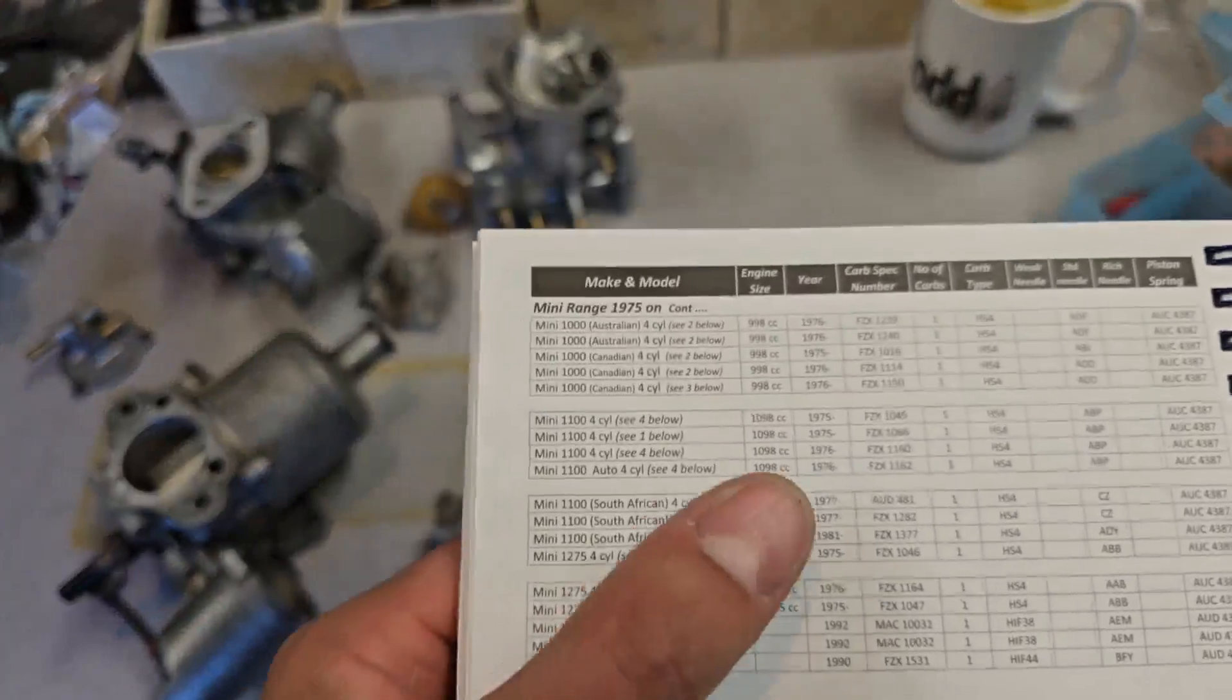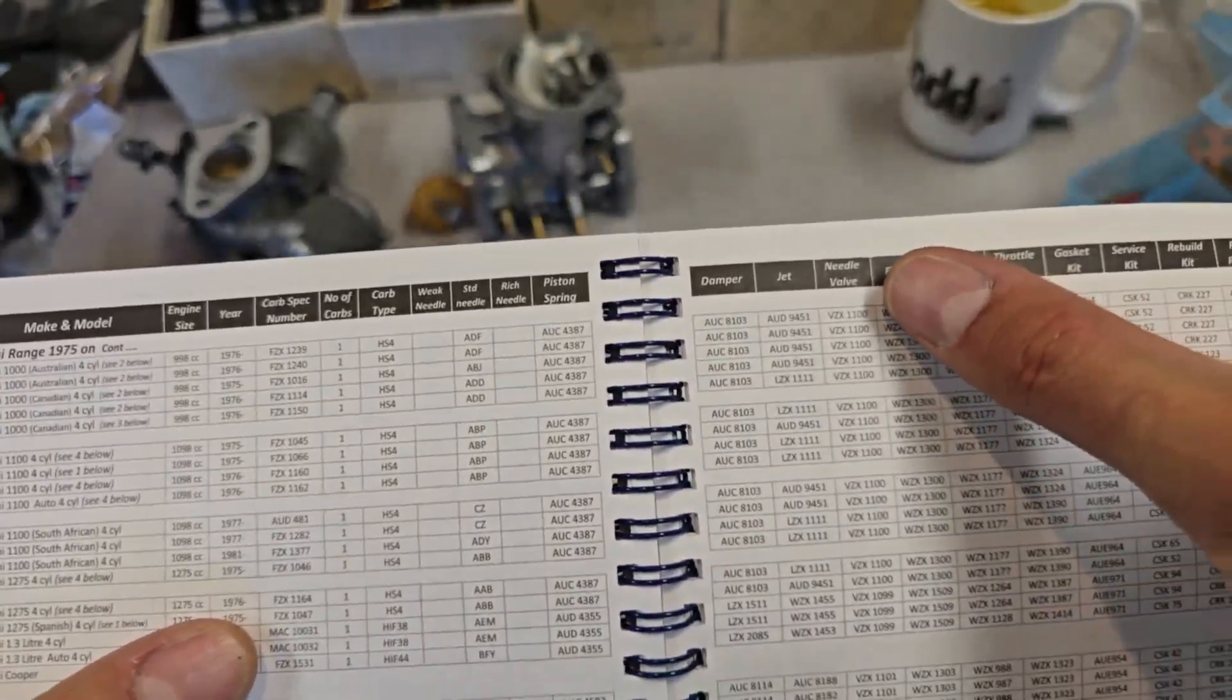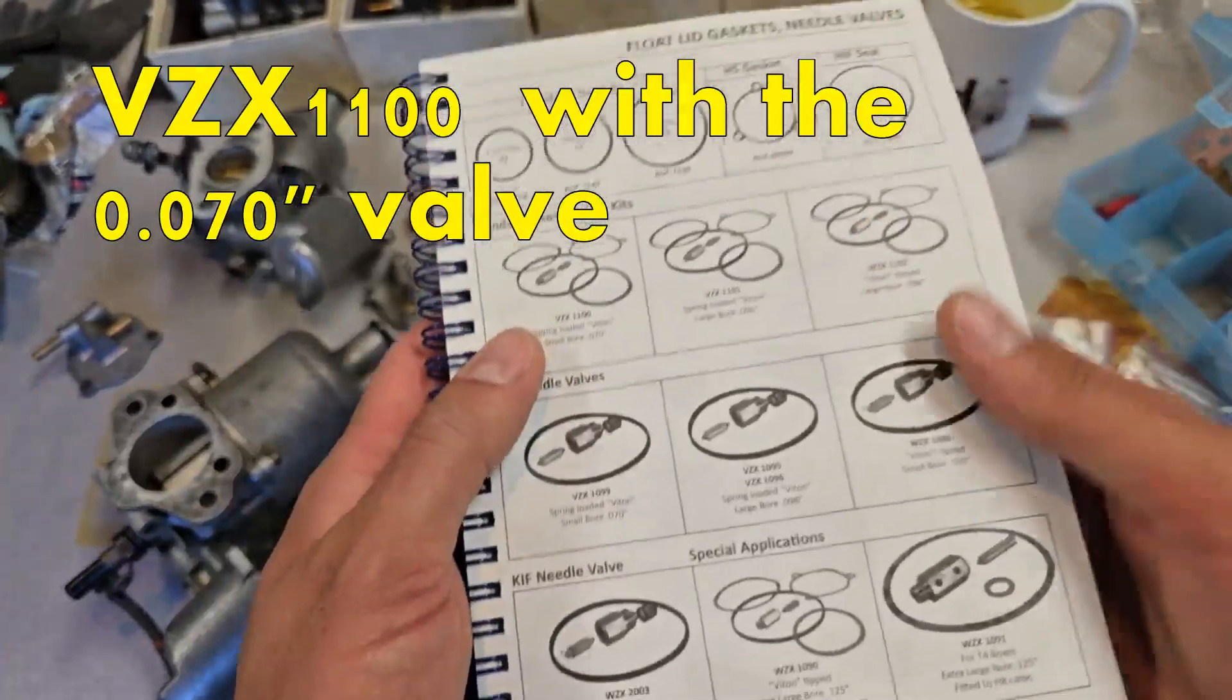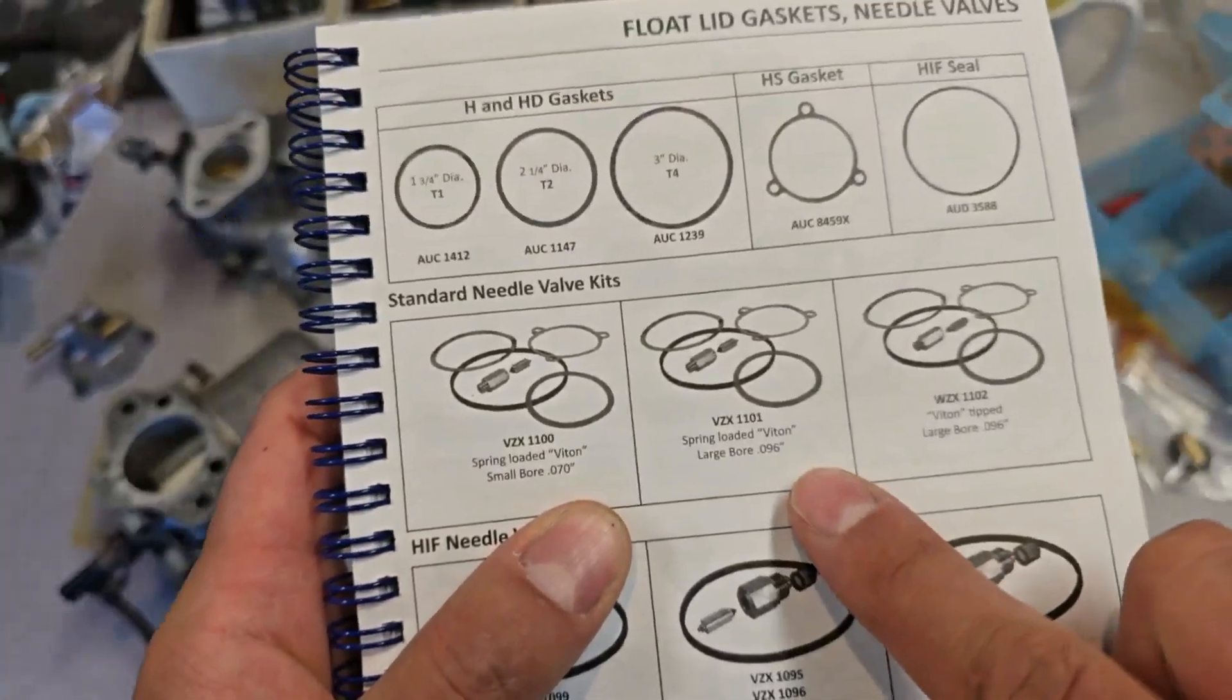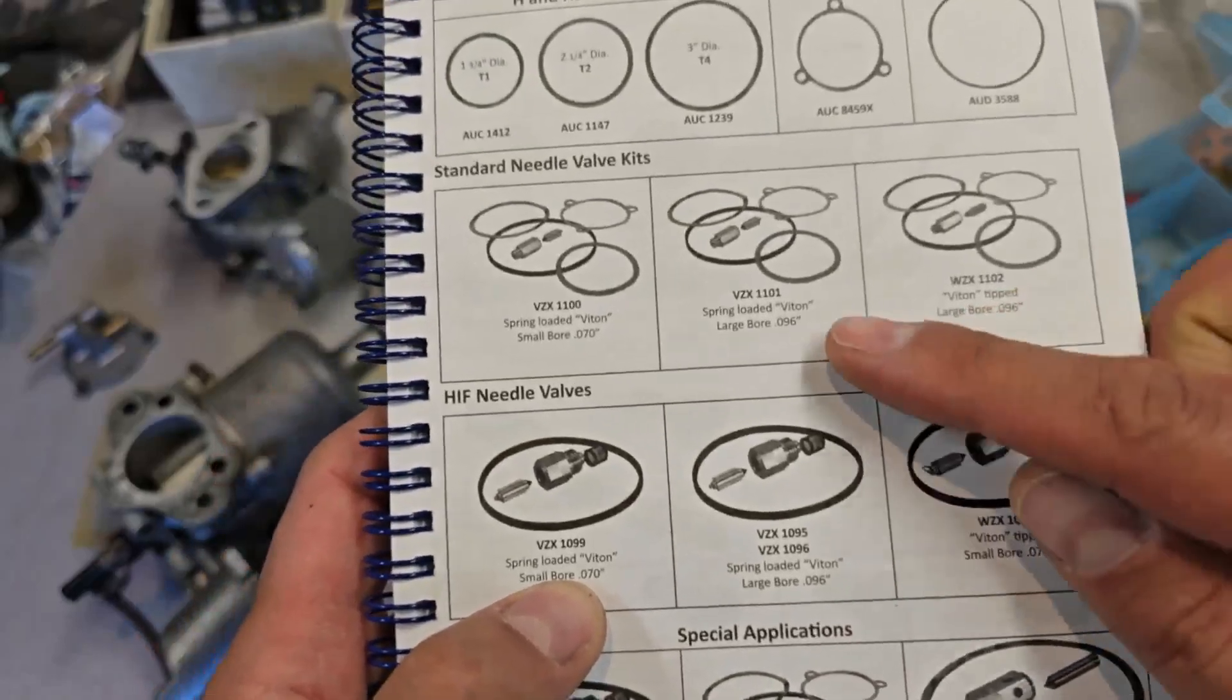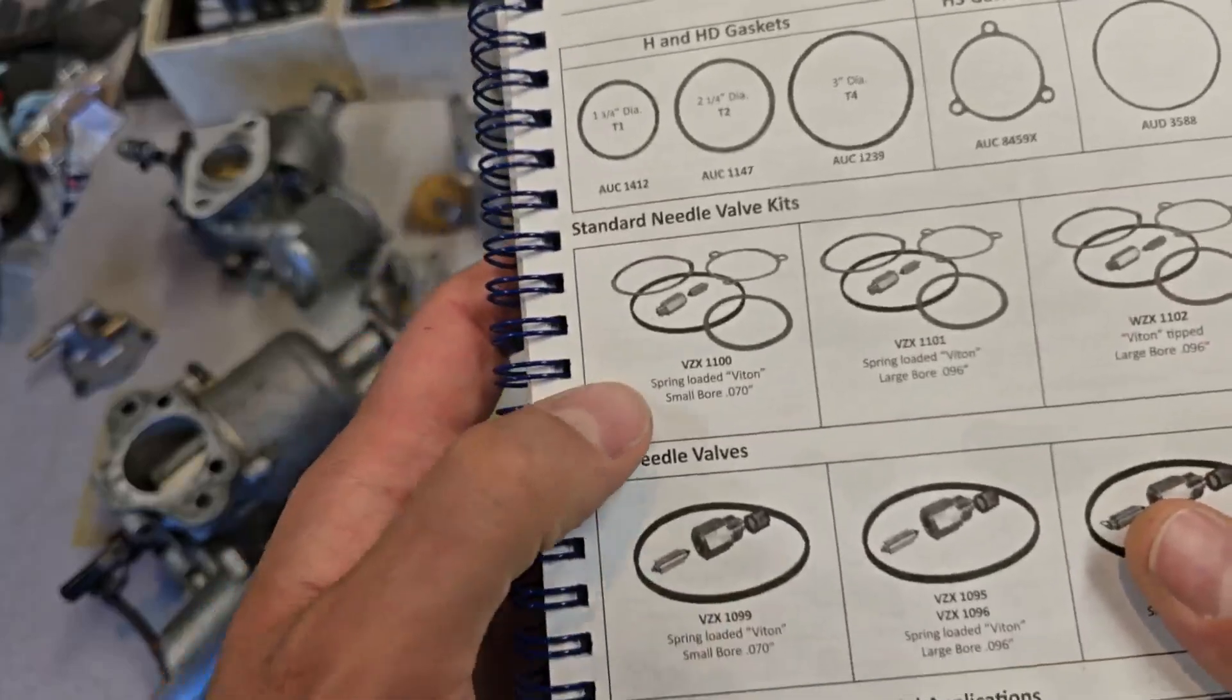So if we flip through here, we get to the mini section. And we can see, for instance, here's all the 998s and 1000s. And it gives you engine size, year, etc. But we can come over here and we can look at needle valve. And you'll notice that they list the same part number for all these cars, the VZX1100. And that references this rebuild kit with the 070 valve. There is also a 96 valve. And same thing with the HIF carburetors. They have a 070 and a 096. I would only consider using a 96 valve on a turbo application or a race application where you're running hard, high RPMs sustained. Any street car should be running a 070.